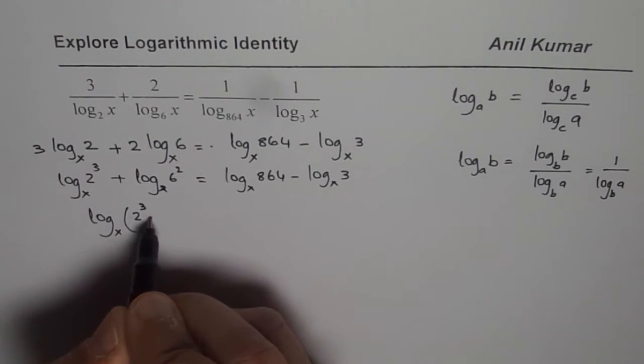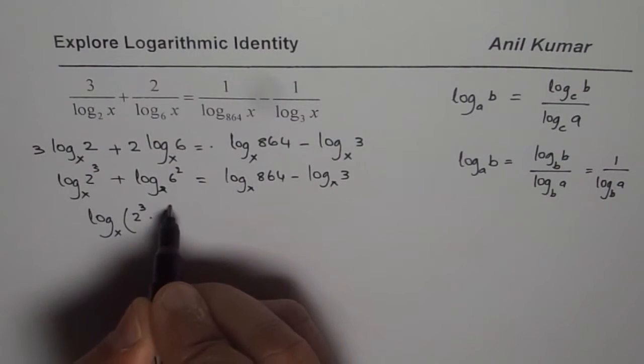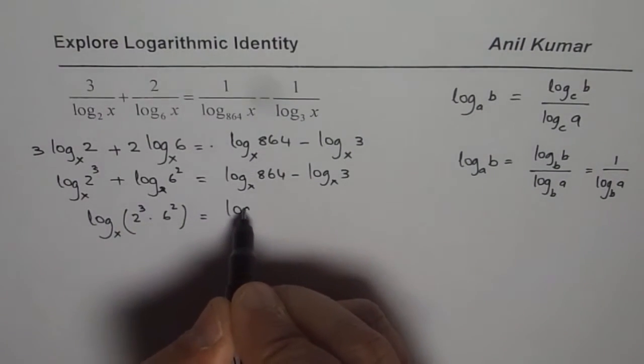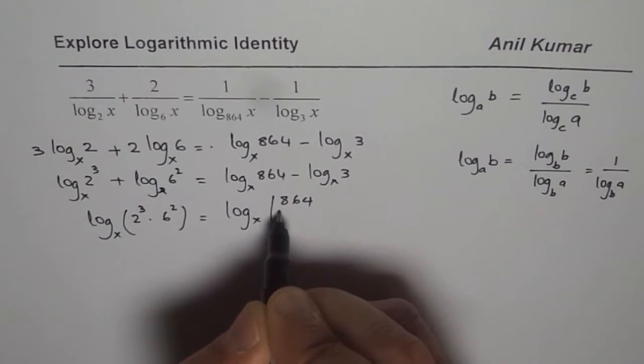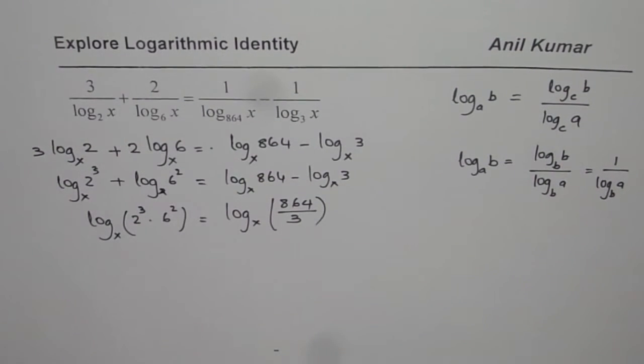2 to the power of 3, let me write first, 2 times 6 square we know 36 but we will write like this itself. And here we can write this as log to the base x of 864 divided by 3.